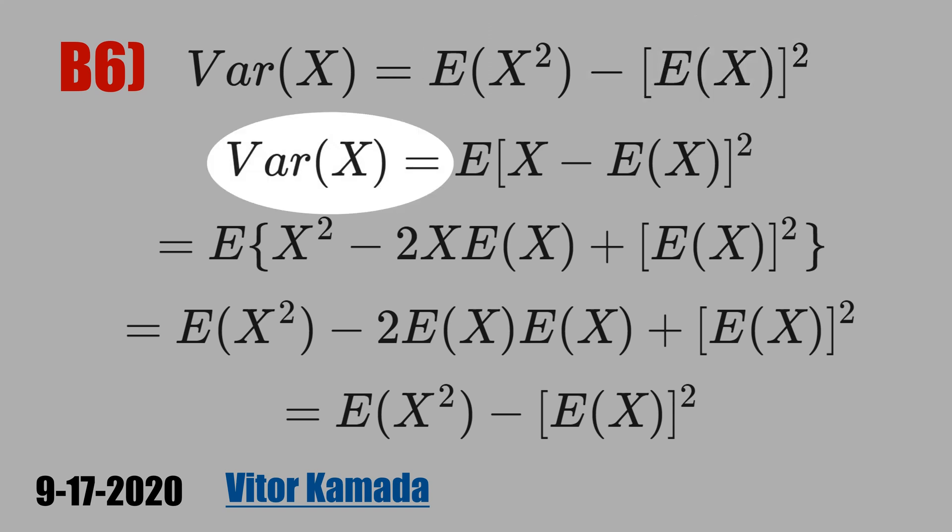Let's start writing the definition of the variance of a random variable X. Inside, we have the random variable X minus the mean of X. That means this is the deviation. Then we have to square this deviation and then take the expectation.